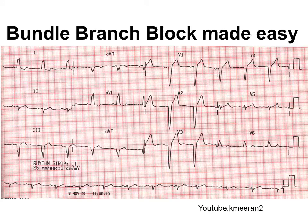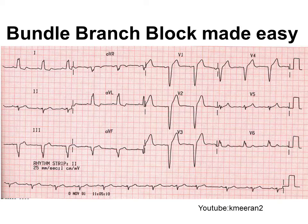In this ECG, with broad complexes, this is left bundle branch block. There's a W pattern in V1 — down, up, down, up, with a little notch — and you can clearly see an M pattern in V6. So W going to M spells 'William,' confirming left bundle branch block.